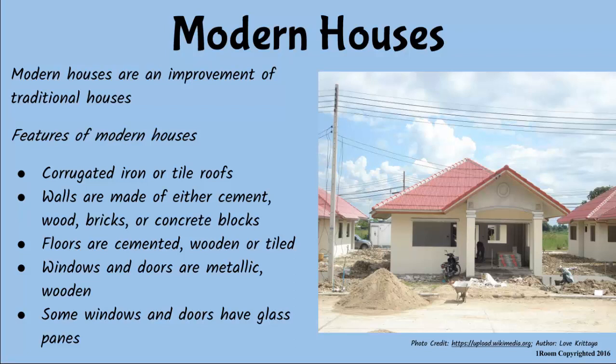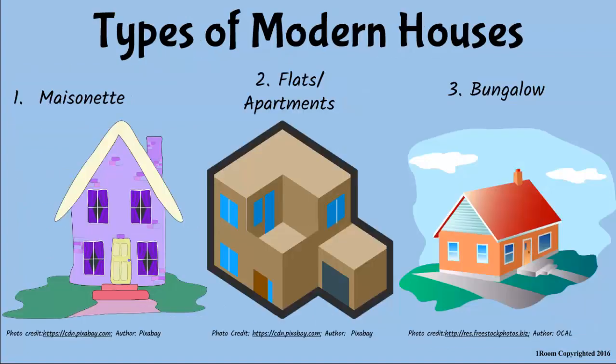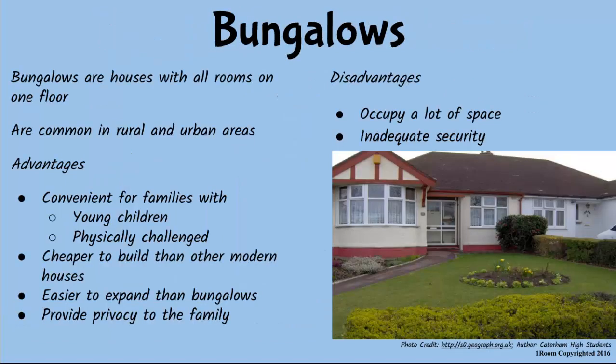Mom asks Jim whether their house looks the same as Paul's. Jim says no. She explains: they live in a bungalow, which has all the rooms on one floor. Both city and rural families prefer bungalows because they are inexpensive to construct and easy to expand. They are also good for families with small children and physically challenged people since there are no stairs to climb. Since bungalows are not shared with other families, they offer more privacy than apartments, but they take up a lot of space and are prone to insecurity since they are isolated.